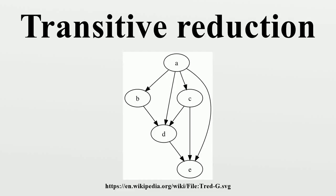In mathematics, a transitive reduction of a directed graph is a graph with as few edges as possible that has the same reachability relation as the given graph. Equivalently, the given graph and its transitive reduction should have the same transitive closure as each other, and its transitive reduction should have as few edges as possible among all graphs with this property. Transitive reductions were introduced by Aho, Garey, and Ullman, who provided tight bounds on the computational complexity of constructing them.